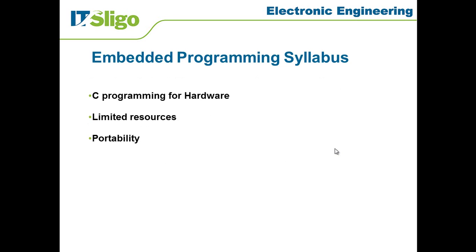To start off with the embedded programming syllabus, we're going to be doing some C programming for hardware. This is different from standard C programming for the desktop PC. We're going to be doing it for specific pieces of embedded hardware, and that's what separates us from the ordinary C programmer. This means we're going to have limited resources — the PC has limited resources too, but nowhere near as limited as most embedded systems. We'll have to take into account just how limited those resources are before we can write our program.